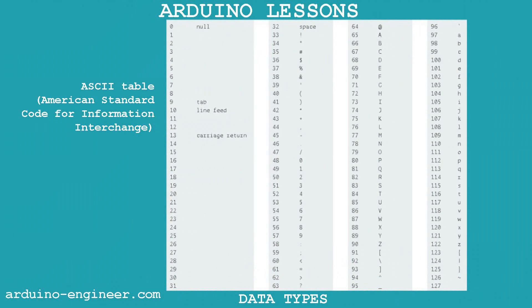Now let's look at the ASCII table itself. This is a table of correspondence between symbols embedded in the compiler and their decimal numeric codes. Before the 32nd character there are unreadable characters. In the example we used the letter A when trying to find its digital code. Cyrillic letters begin with the code 192 in the extended ASCII table. We will continue about Cyrillic at the end of the lesson.